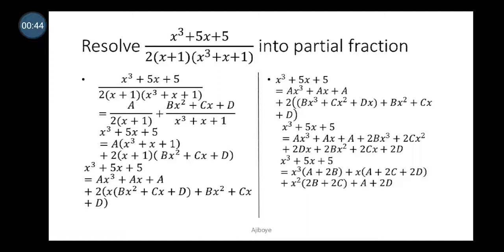The first thing to do is to identify the factors in the denominator. We have a linear factor and a polynomial factor. When you have a linear factor, you place a constant over the linear factor. When you have a polynomial factor, you start from the variable with a degree one less than the polynomial in the denominator. So our complex fraction is x³ + 5x + 5 all over 2(x + 1)(x² + x + 1).